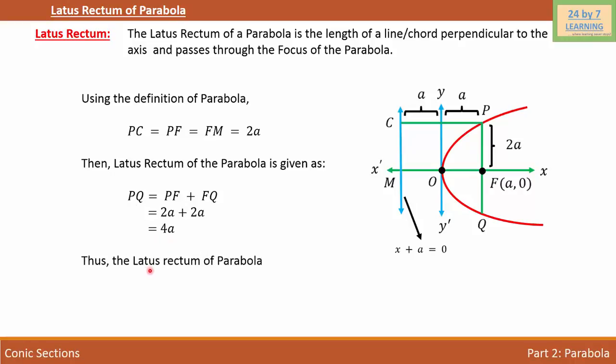Thus, the latus rectum of the parabola is L equals 4a. In other words, if we want to find the length of the latus rectum of a parabola, it will be 4 times a.